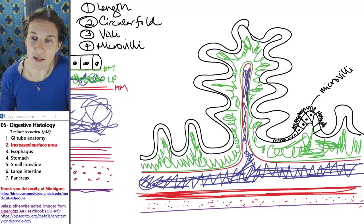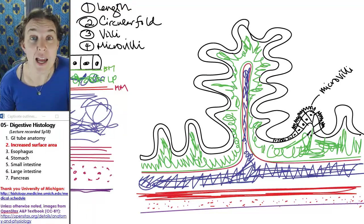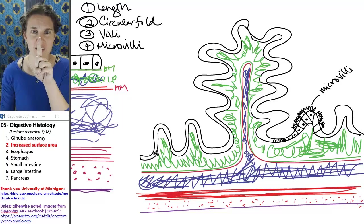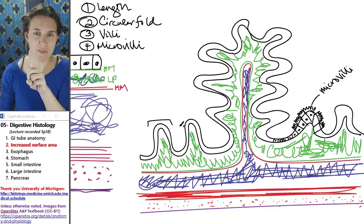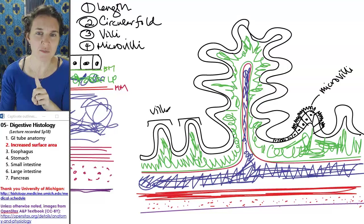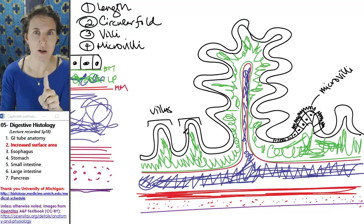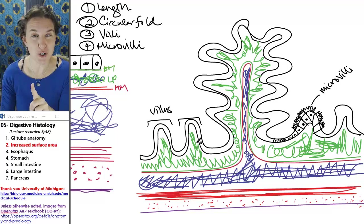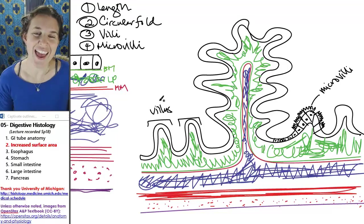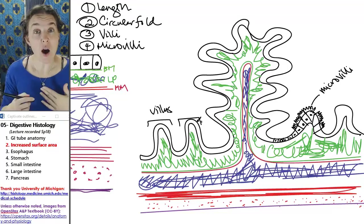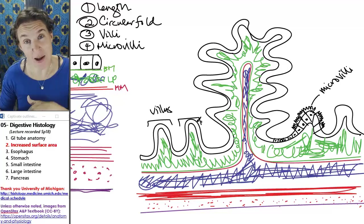Each one of these lamina propria filled extensions, each one of them is a villus. So here's one villus. Here's two villus. I mean, here's one villus, here's two villi. And the villi are made up of cells that have microvilli.